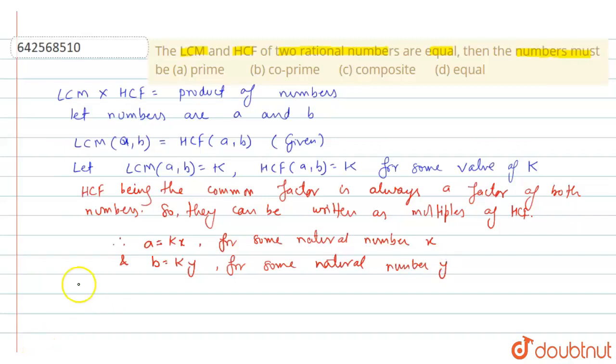Putting the values in our formula which we mentioned in the starting, we get LCM, which is K, into HCF, which is K, is equal to the first number A and second number B.